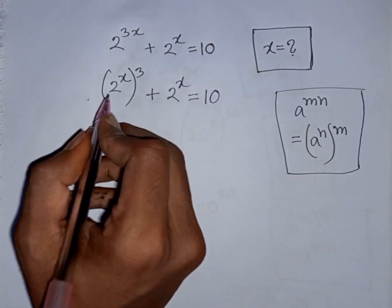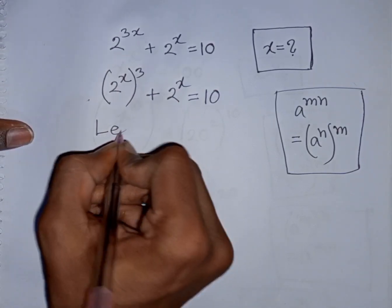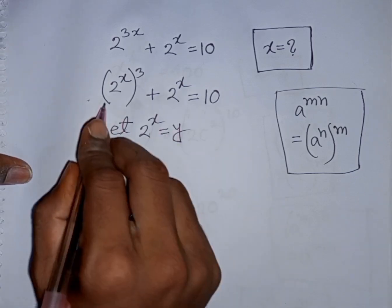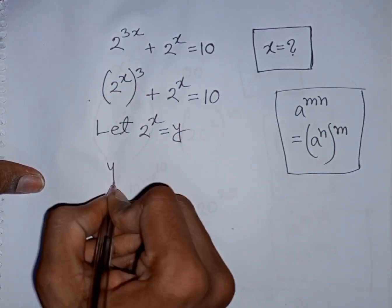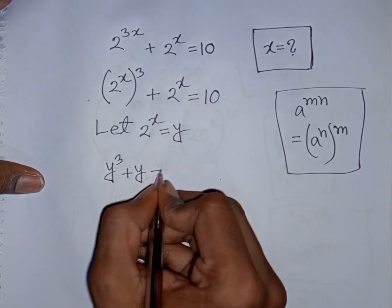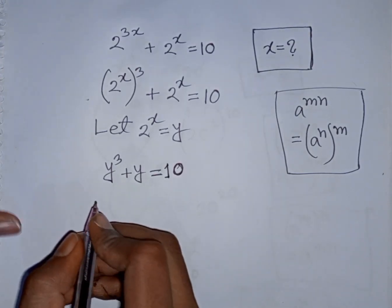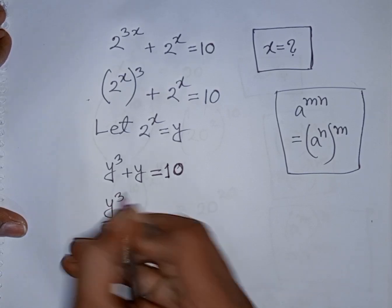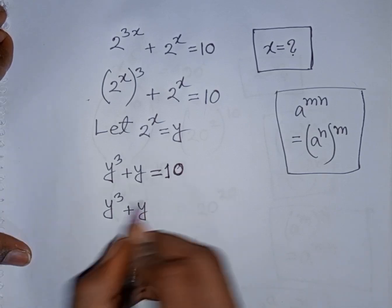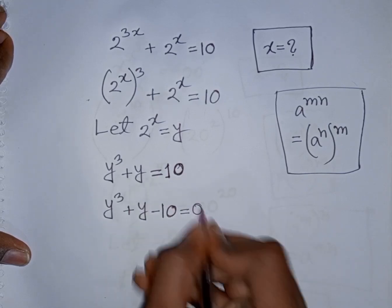Now we see 2 to the power x appears in both terms, so let 2 to the power x be substituted by y. So our equation will be y cubed plus y is equal to 10. We bring 10 to the left side, so this becomes y cubed plus y minus 10 is equal to 0.